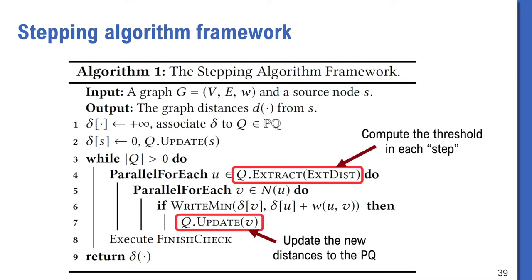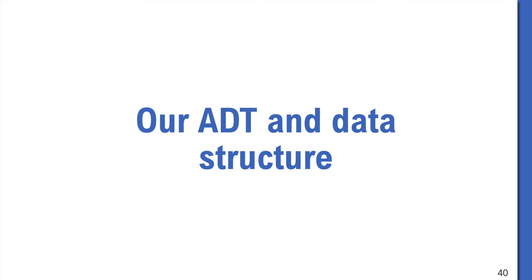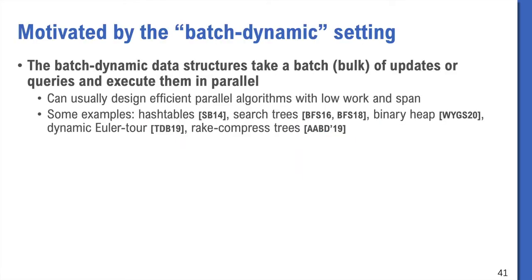If we look at the algorithm framework, the only missing part is how to implement the lazy-batch priority queue and these two functions. Let's move on to our ADT and data structure. Our data structure, the lazy-batch priority queue, is inspired by some recent work about batch-dynamic data structure. Intuitively, batch-dynamic data structure means that the data structure accepts batches of modifications or queries in parallel.